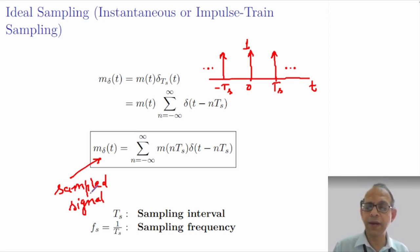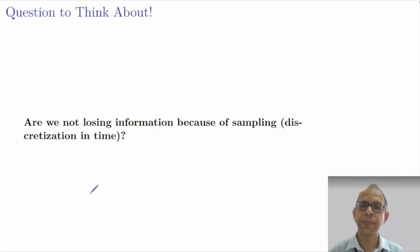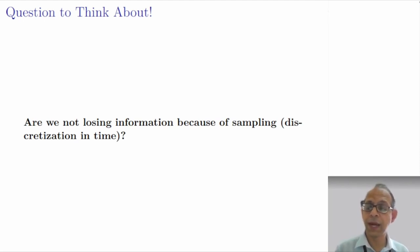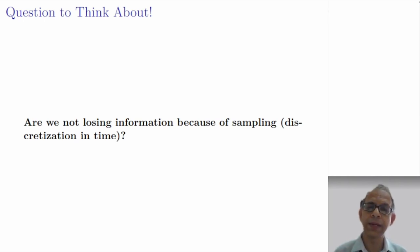At this point we have raised an important question: by discretizing the signal in time, are we not losing information? It is a question of fundamental importance, and to get the answer we need to look at the spectrum of the sampled signal. For that, we first need to look at the spectrum of the impulse train.